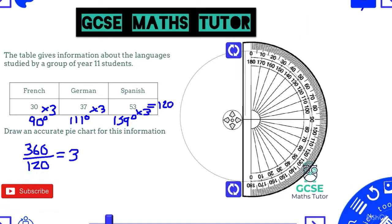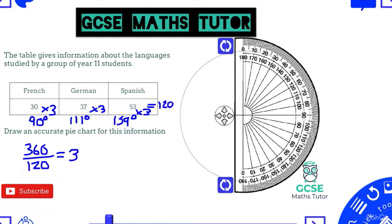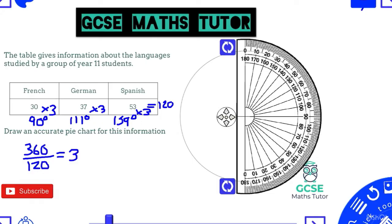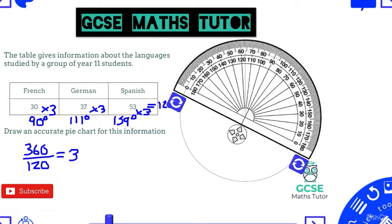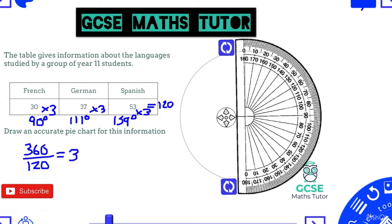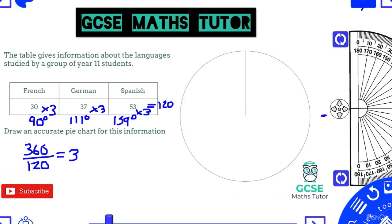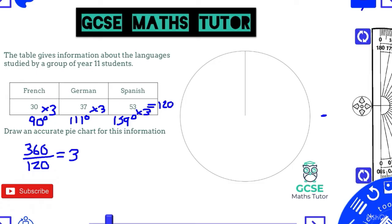Place your protractor over the pie chart with the crosshair right on the centre. Rotate it so the zero guideline is lined up with your starting vertical line. Mark on 90°, then remove the protractor and use a ruler and pencil to draw a line from the centre out to that mark. That gives you your 90° angle.